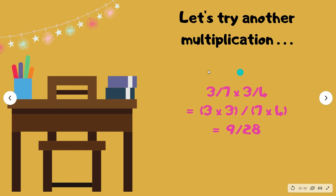Let's try 3 over 7 times 3 over 4. You multiply 3 by 3 — those are the numerators — and you multiply the denominators 7 and 4. You end up with 9 over 28, and nothing can be simplified further.